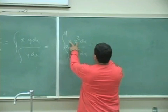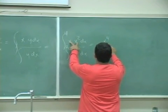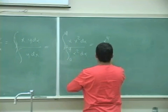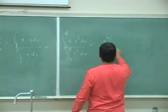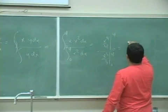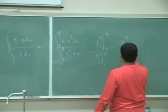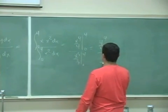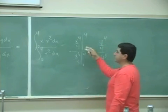And then you get what here? x cubed. The integral of that is x to the 4th over 4. This one is x cubed over 3. From 0 to 4, 4 to the 4th over 4, divided by 4 to the 3rd over 3.